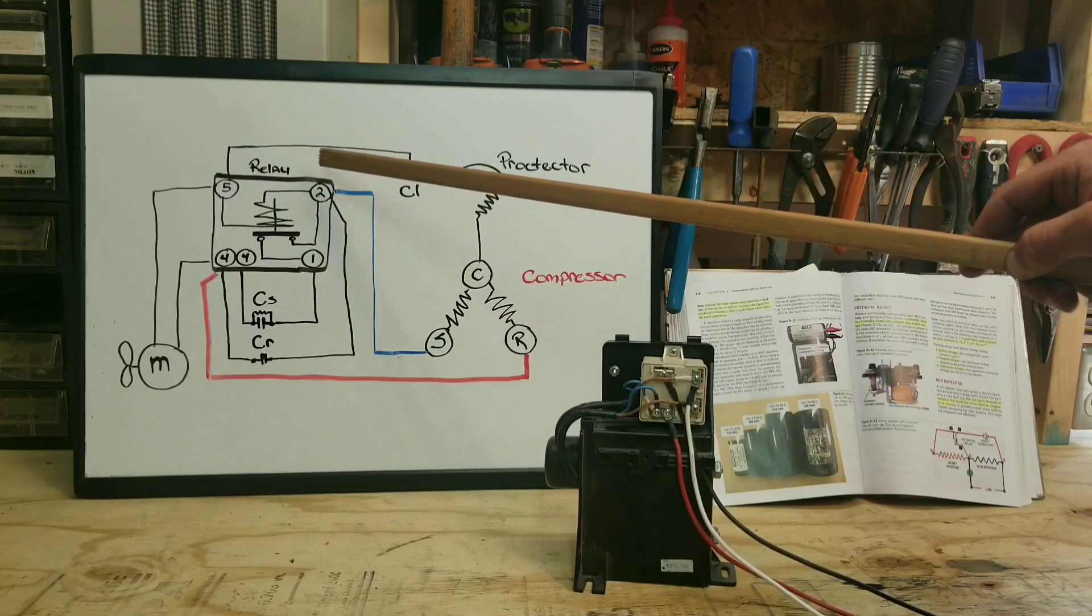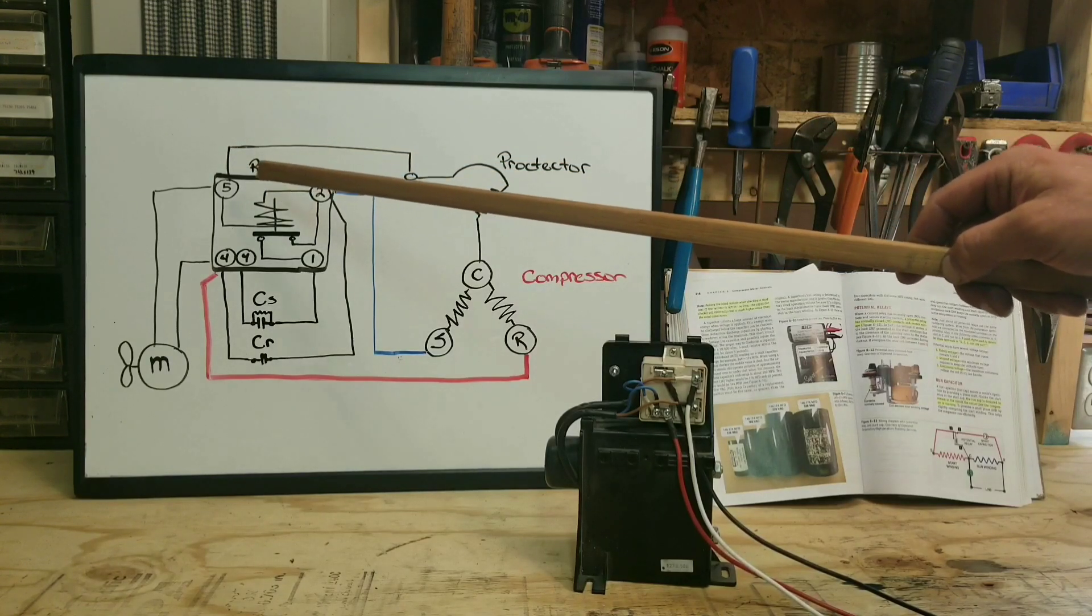All right guys, so that wraps up our little speech about potential relays. One of the things I did want to reiterate that I don't think I touched on in the video is that sometimes that back EMF voltage coming off of the start winding can be upwards of 400 volts. So be very careful if you are testing it. If you feel like you just want to go in there and poke around with your meter leads, be very careful because you could be touching some pretty high voltage, even though you're only working on a 120, 208, 240, whatever unit. That back EMF coming off of that start winding might be much, much higher, so be careful with that.